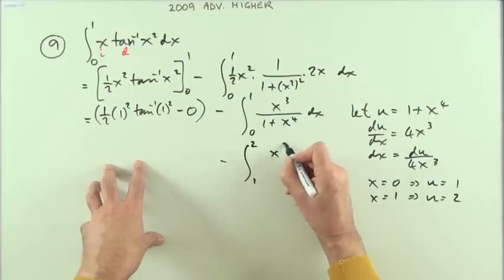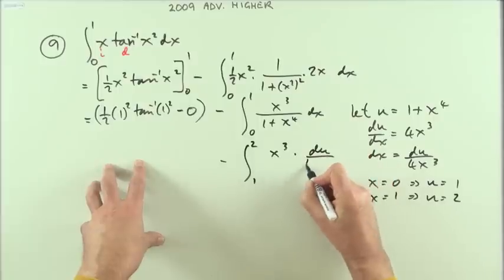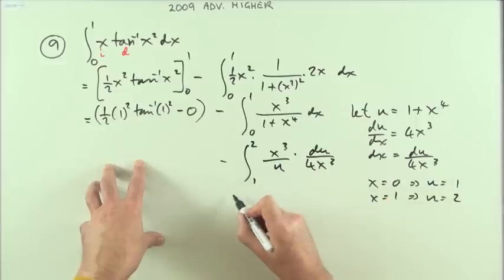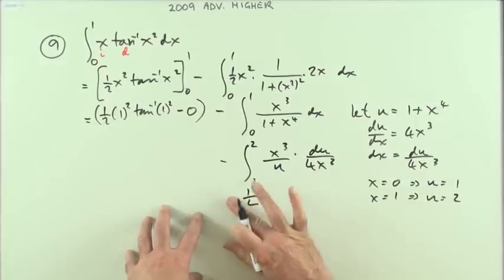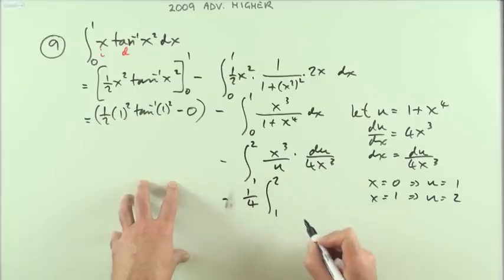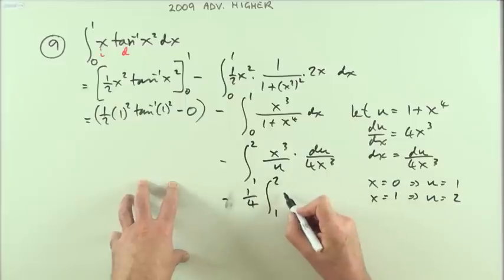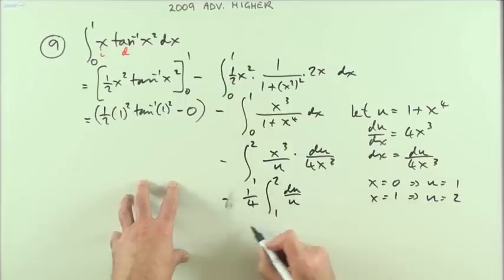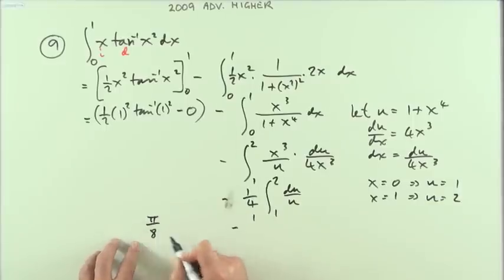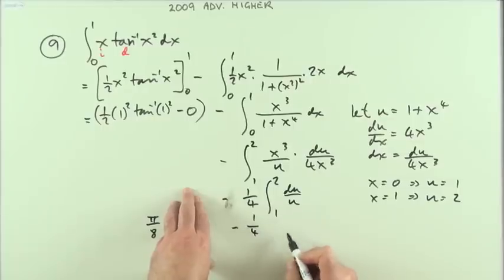So I've got x cubed times du over 4x cubed, I took care of that, over u. So I've got 1 quarter, I should just put minus, minus 1 quarter of the integral from 1 to 2 of just du over u, which is minus, because all this part here was that pi upon 8, minus 1 quarter of and that'll just be ln u.